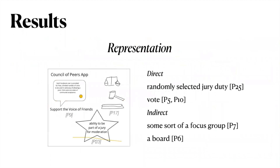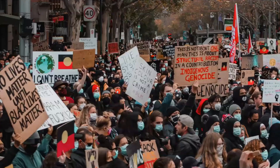The first thing we found was a call for representation. Participants suggested both direct forms of representation, like a randomly selected jury duty or vote, but also indirect forms of representation, like focus groups or boards of users. While some people had theoretical reasons, people often suggested this to achieve very practical goals — for example, many participants were concerned with the cultural competence embedded in content moderation systems.